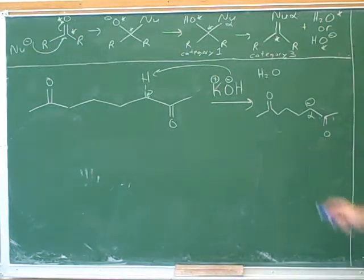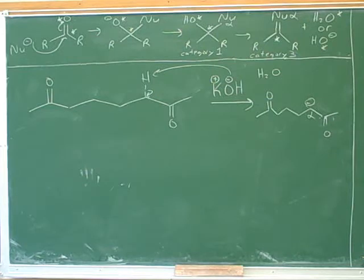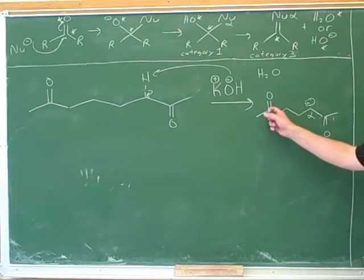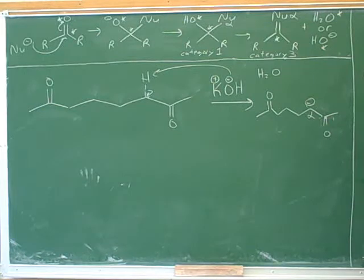Any ideas what might happen? The alpha carbon would actually attack the carbonyl carbon on the same chain. That's right — it's theoretically possible that it could attack a carbonyl in another molecule, but it's probably going to run into this carbonyl faster. Intramolecular reactions can be faster than intermolecular. That's a good insight. Let's see if we can draw the mechanism for that step.